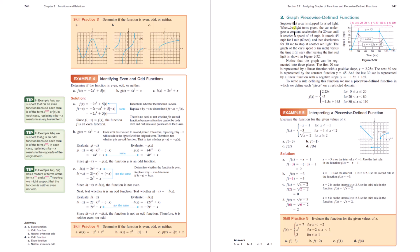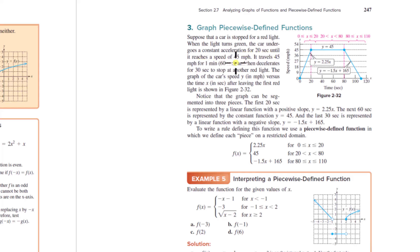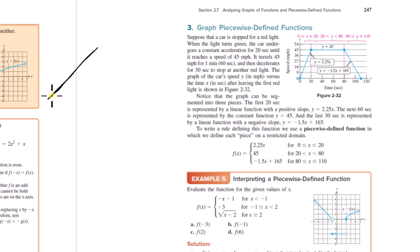They give an example here of how a piecewise function could be used. Suppose a car is stopped at a red light — when the light turns green, the car undergoes constant acceleration for 20 seconds until it reaches 45 miles an hour, travels at 45 miles an hour for one minute, then decelerates for 30 seconds at another red light. Another example I like is a roller coaster. There's no single master function for a roller coaster path — the starting slope is linear, then the loop might be circular or parabolic, then another linear section with a steeper slope. It would be piecewise defined.